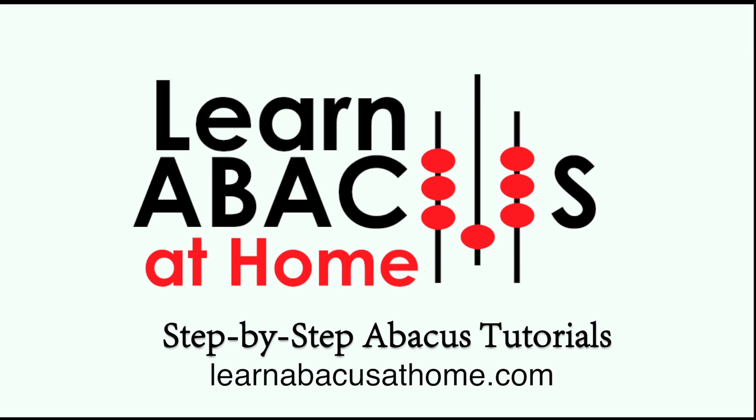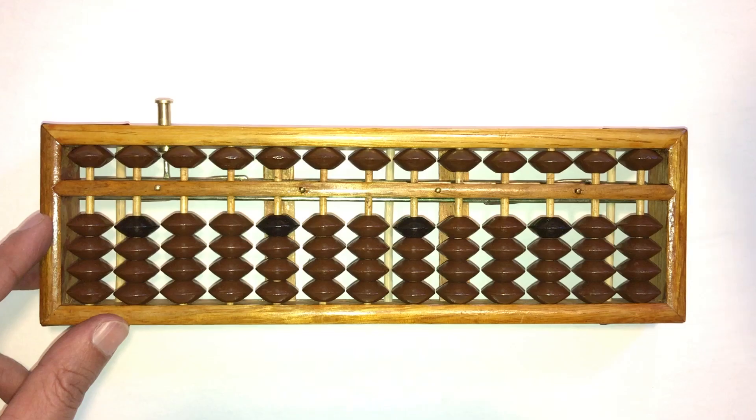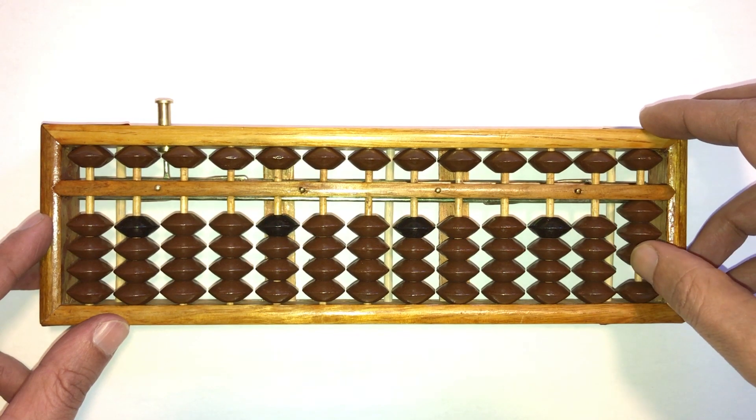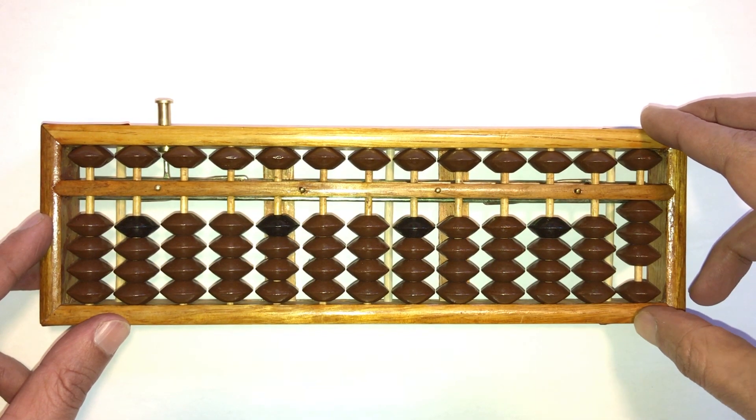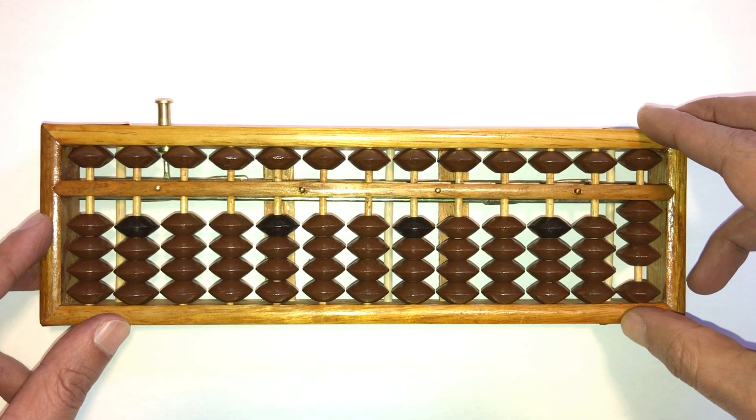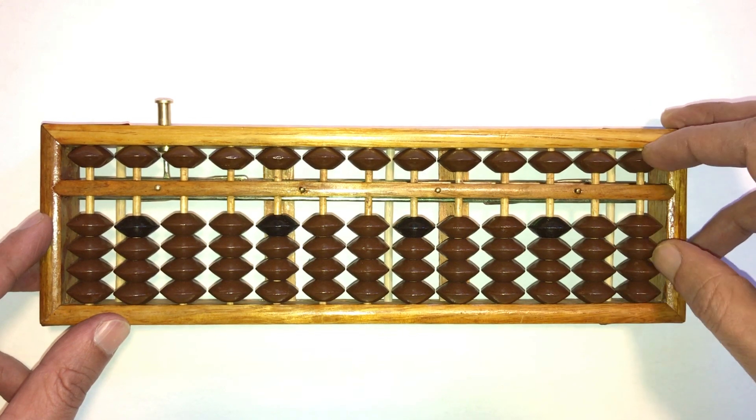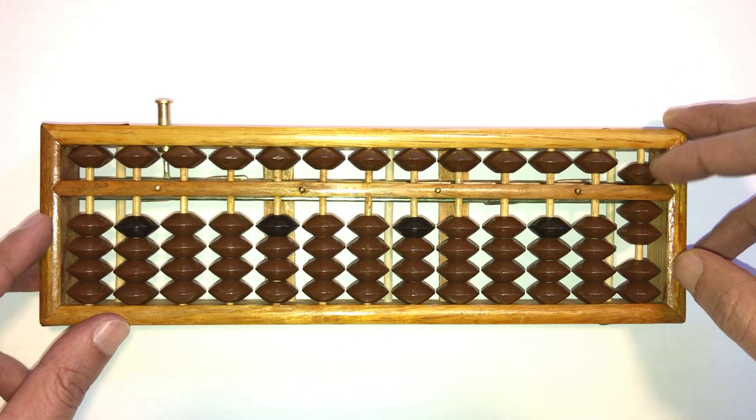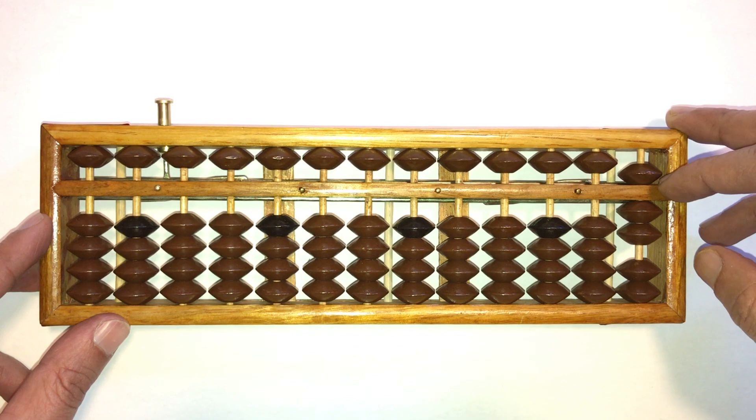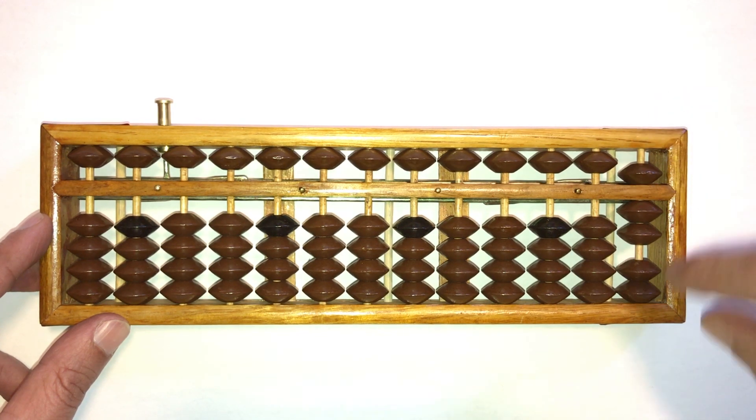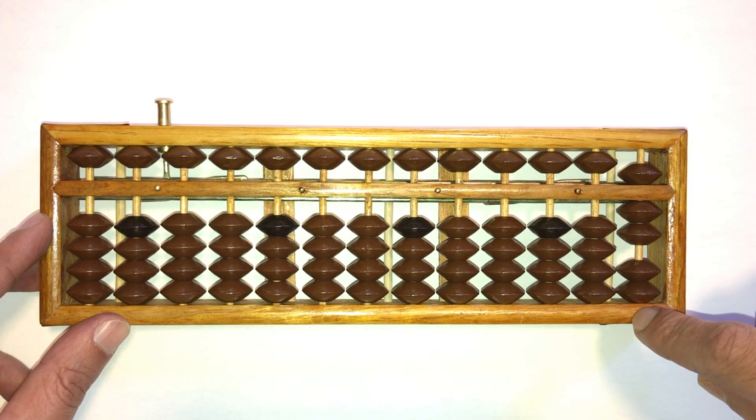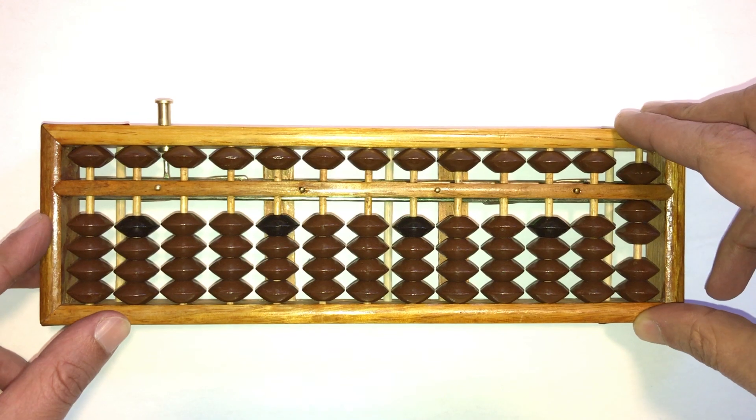Learn abacus at home step-by-step abacus tutorials. So how do we add 3 plus 2? We don't have two beads in the ones column to add. About 7 plus 5? Well, the 5 beads already down is touching the answer bar. How do we add another 5 in the ones column?